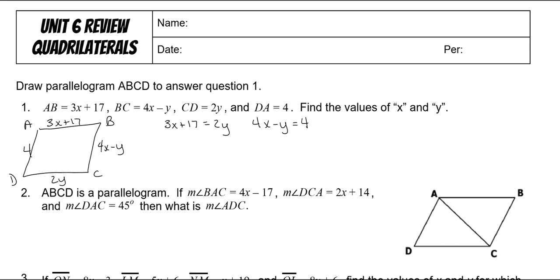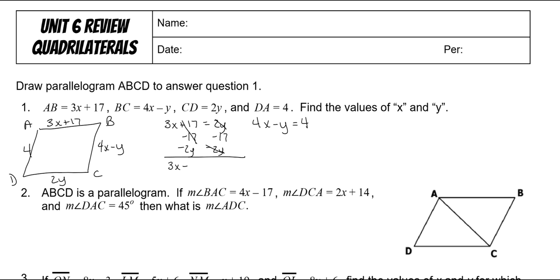In order to make something go away, we need both of these equations to look the same, meaning there's an X and a Y on the left and a number on the right. We need to move the 2Y over and move the 17 over to the other side. So I'm going to put the 17 on the right, and take the 2Y to the left, meaning it will be 3X minus 2Y is equal to negative 17.